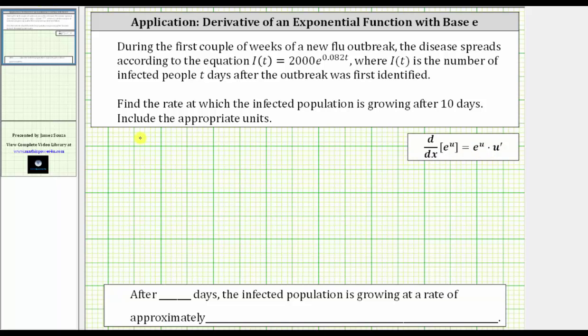So beginning with the given function, we have I(t) = 2000e^(0.082t). Looking at the derivative formula, the exponent is u, so we have u = 0.082t, and now we need to find u', or du/dt. u' is equal to the derivative of 0.082t with respect to t, which is 0.082.